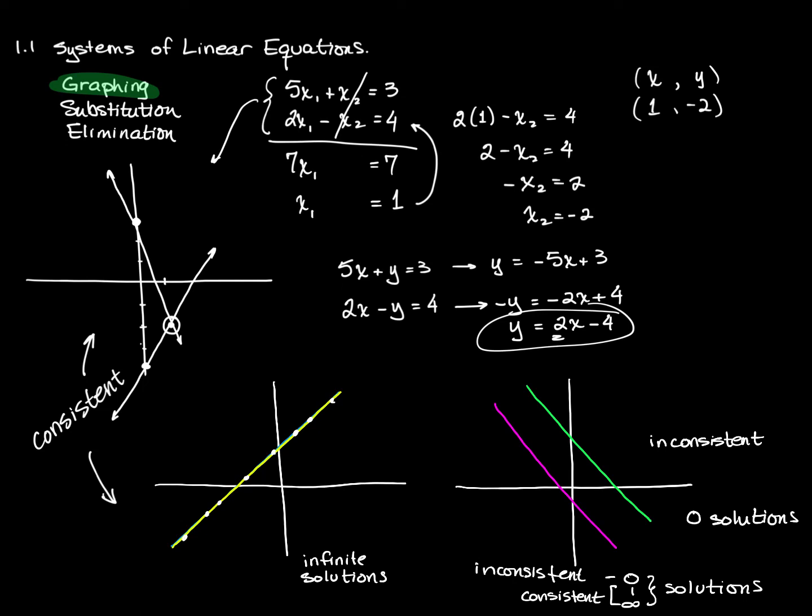And once you get away from two variables, you can't graph them on a plane. With three variables, you can graph them in 3D space, and we'll take a look at that in just a second. But in four variables, we can't graph them.